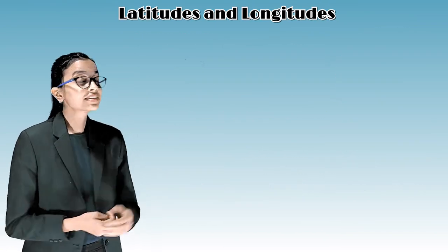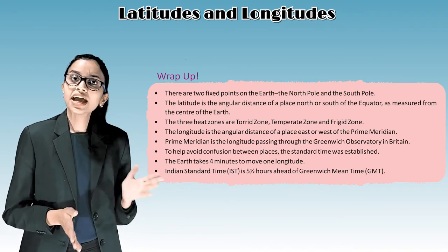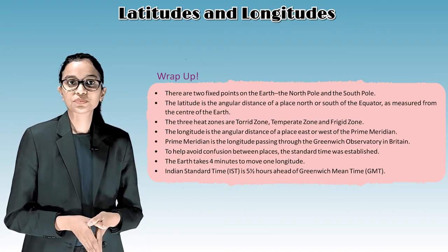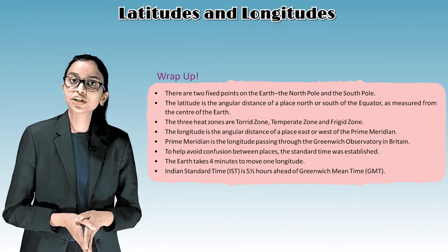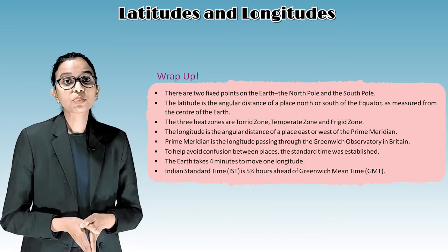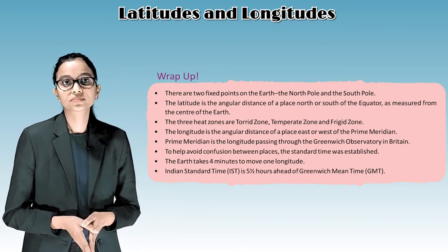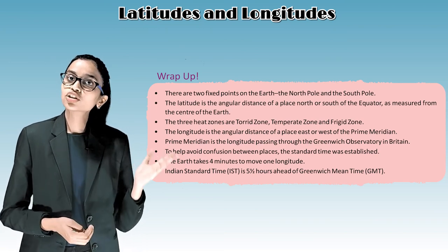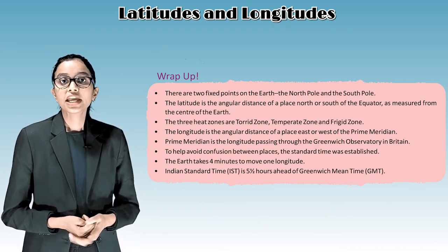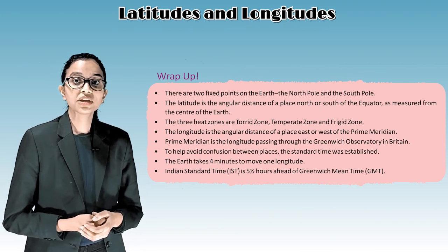Let's wrap up. There are two fixed points on the earth: the North Pole and the South Pole. Latitude is the angular distance of a place north or south of the equator as measured from the center of the earth. The three heat zones are the torrid zone, temperate zone, and frigid zone. Longitude is the angular distance of a place east or west of the prime meridian. The prime meridian is the longitude passing through the Greenwich Observatory. The earth takes four minutes to move one longitude. Indian Standard Time (IST) is five and a half hours ahead of Greenwich Mean Time (GMT).